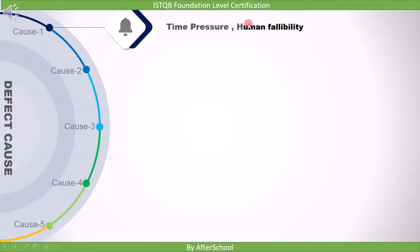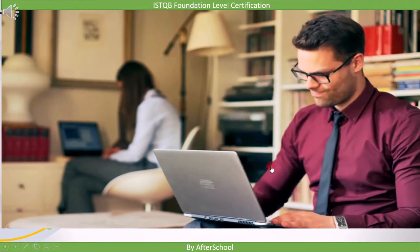Second is human fallibility. As humans, we are all fallible, because fallible means likely to make errors or fail. Nobody's perfect after all.